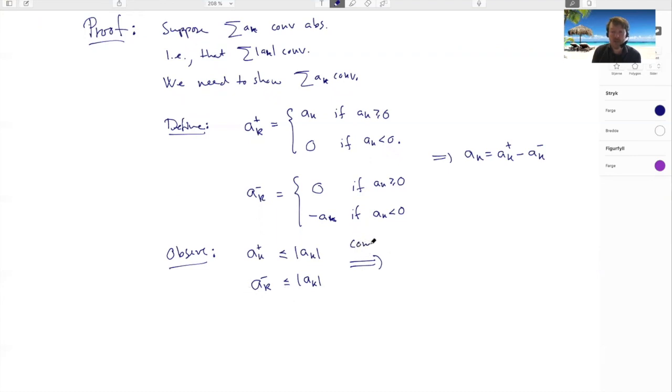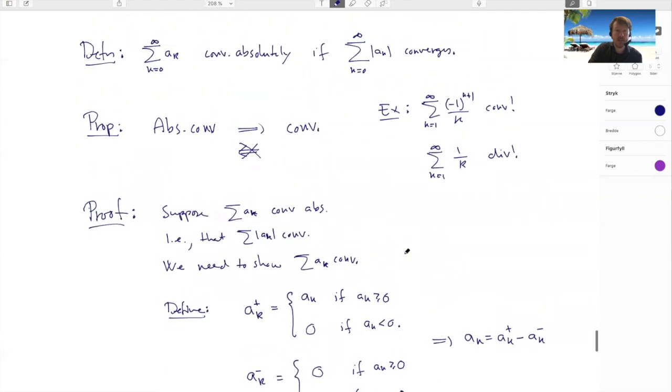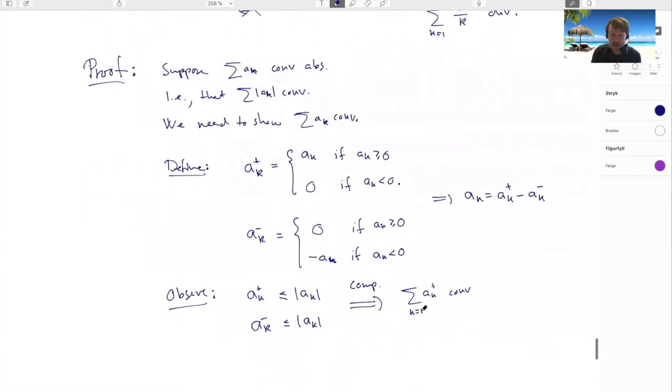So here by comparison, the sum of these guys converge, where I take now k from—I don't know where I started. Let's see, I started at zero, really doesn't matter. And here from zero to infinity of the a_k^- converge.